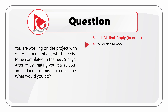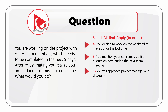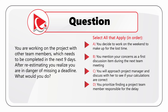Choice A: You decide to work on the weekend to make up for the lost time. Choice B: You mention your concerns as the first discussion item during the next team meeting. Choice C: You approach the project manager and discuss with her to see if your calculations are correct. Choice D: You prioritize finding a project team member responsible for the delay. Choice E: You review the project plan to determine other tasks that might be delayed as well.